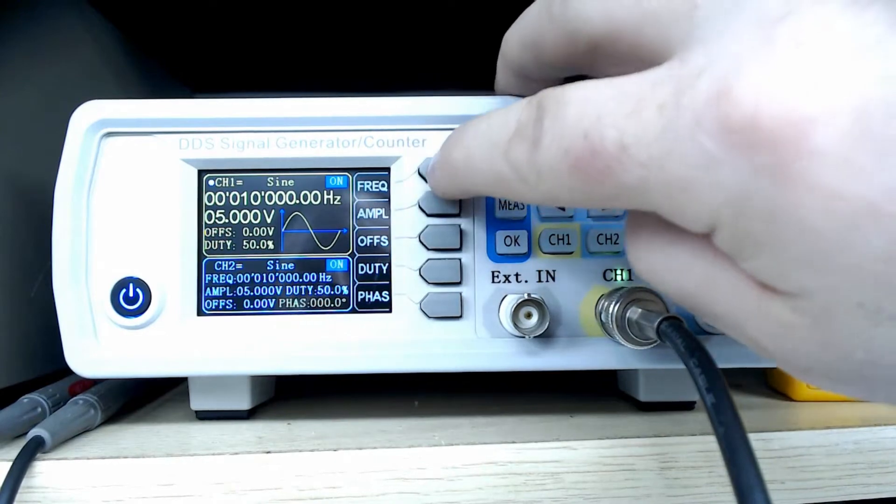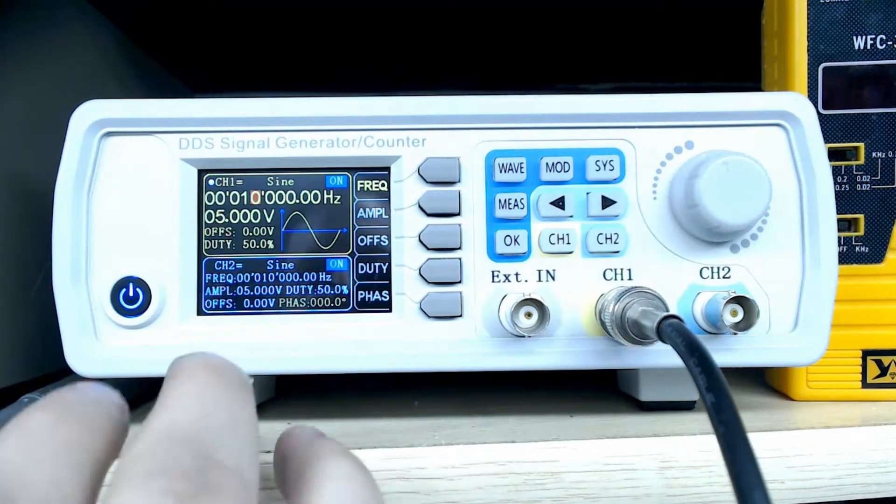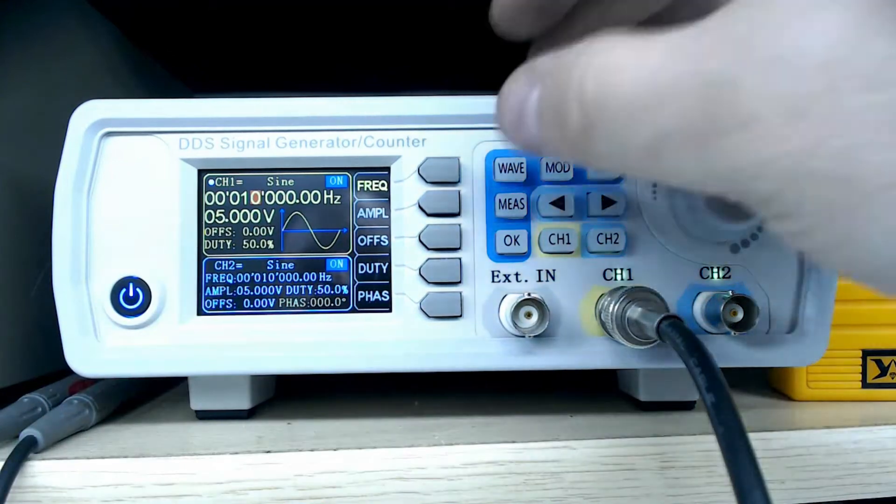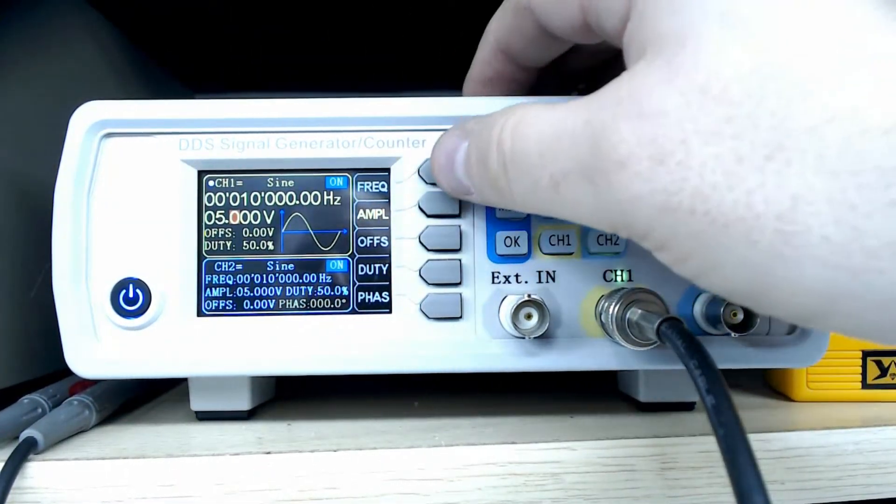To change the frequency you press the frequency button. Right now it's set to 10 kilohertz or 10,000 hertz. Amplitude is how much power you want out of this thing. Right now it's set to five volts.